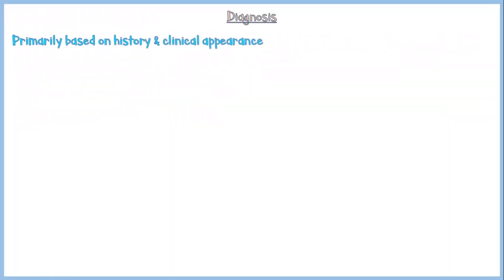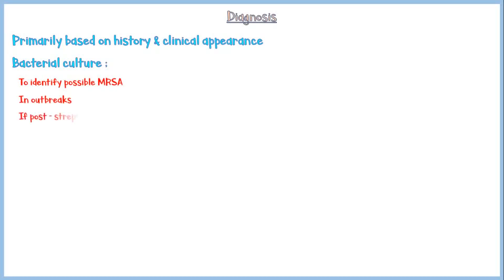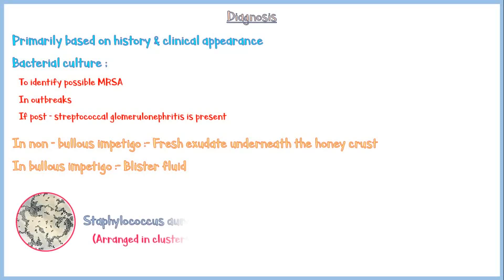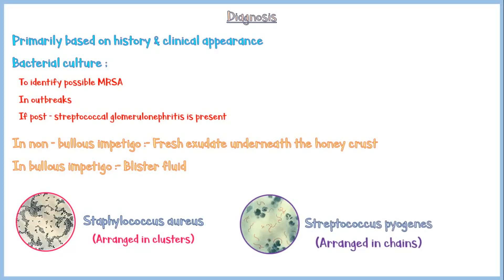Diagnosis of impetigo is primarily based on the history and clinical appearance of the patient. Bacterial culture is sometimes recommended to identify possible MRSA in outbreaks and if post-streptococcal glomerulonephritis is present. The specimen for culture in non-bullous impetigo is the fresh exudate underneath the honey crusts, and in bullous impetigo it is the blister fluid. In microscopy, Staphylococcus aureus is seen arranged in clusters, and Streptococcus pyogenes is seen arranged in chains.